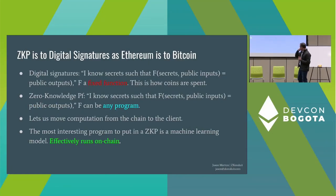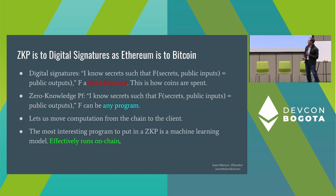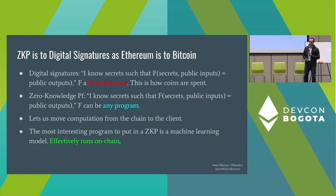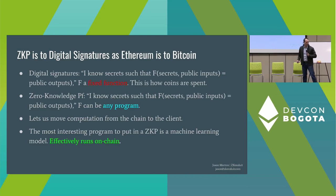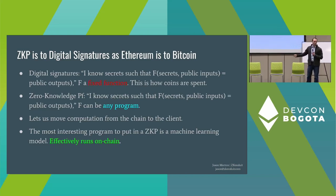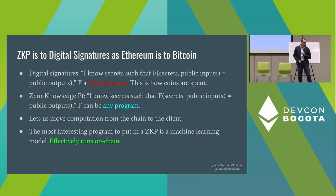For those of you that aren't as familiar, zero-knowledge proofs are to digital signatures as Ethereum is to Bitcoin. We're replacing a digital signature with any program. The thesis of ZKML is that the most interesting program to put in a zero-knowledge proof is a machine learning model.